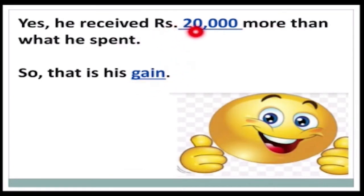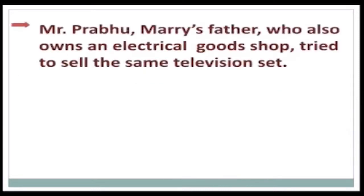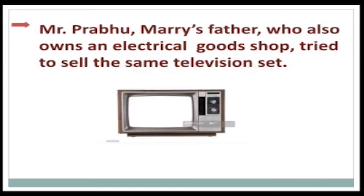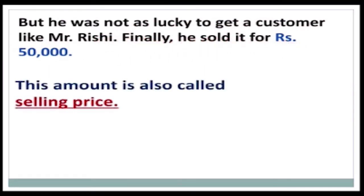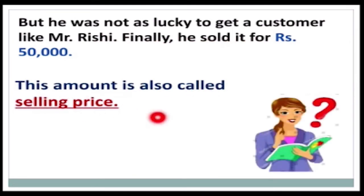Now another example. Mr. Prabhu's father, who also owns an electrical goods shop, tried to sell the same television set but was not as lucky as Mr. Rishi. Finally, he sold it for rupees 50,000. This amount is also called the selling price.